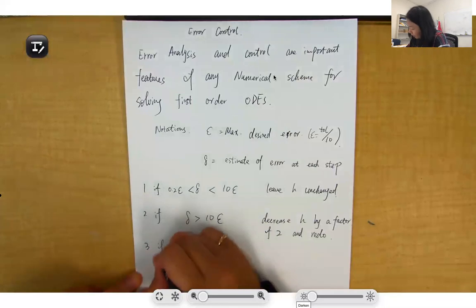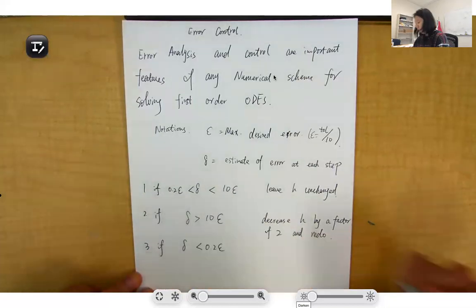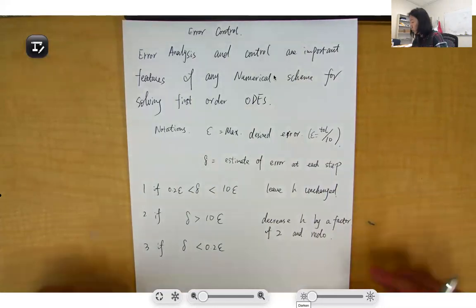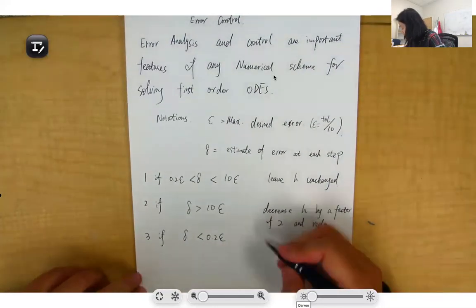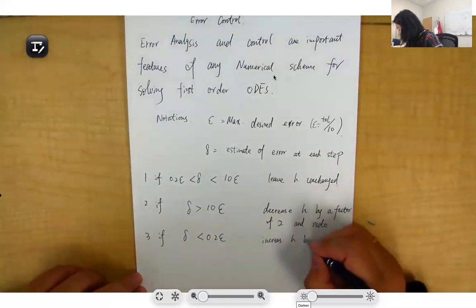If sigma is too small, smaller than 0.2ε, then we will increase the step size h by a factor of 2.